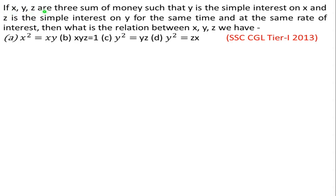If x, y, z are three sums of money such that y is the simple interest on x, and z is the simple interest on y for the same time and at the same rate of interest, then what is the relation between x, y, z? Options: (a) x² = yz, (b) xyz = 1, (c) y² = xz, (d) y² = zx.